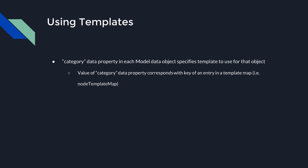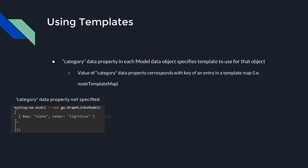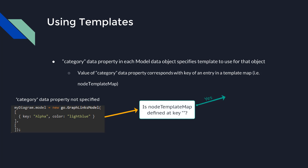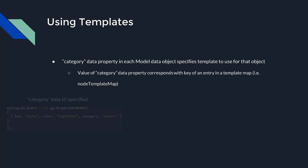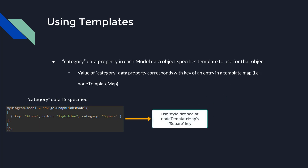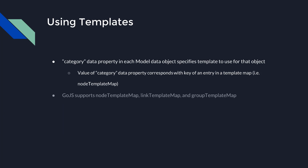For example, node data without a specified category renders using the value in node template map corresponding with the empty string key, which node template is a synonym for, or it will use the GoJS default node template. Alternatively, if a value for category is defined, that part will be styled according to the template corresponding with the part template mapped to the provided category value inside the appropriate part template map. GoJS supports node template map, group template map, and link template map.